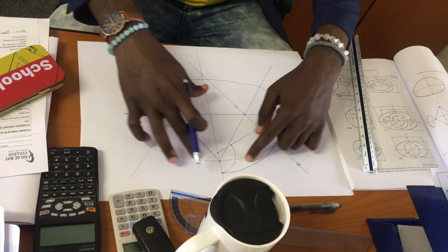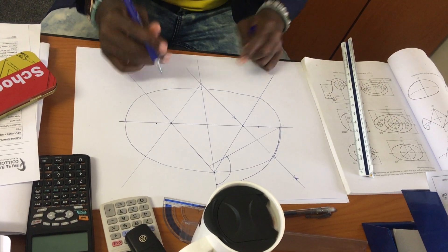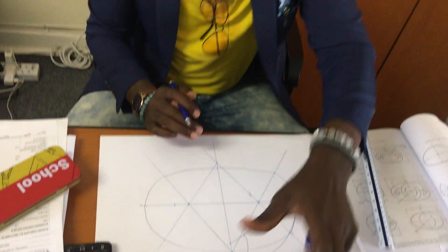Make sure you use solid lines for your ellipse and everything else is in construction lines. And this, ladies and gentlemen, is how to draw an ellipse. Thank you very much and good luck.